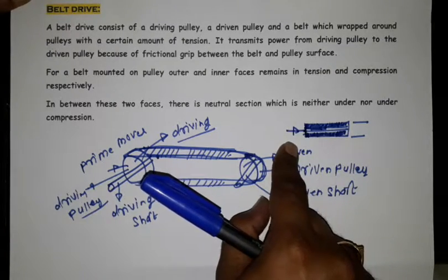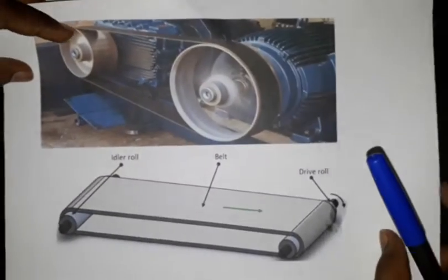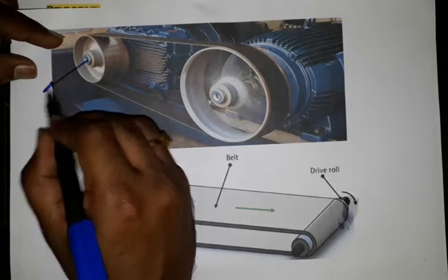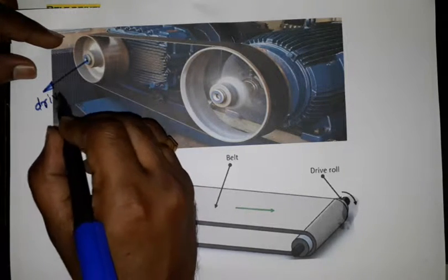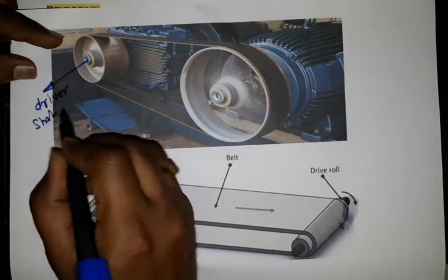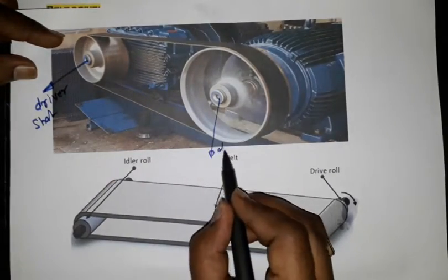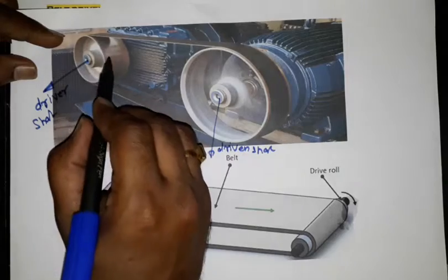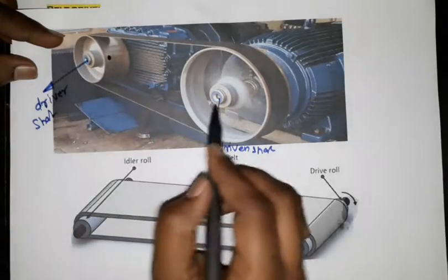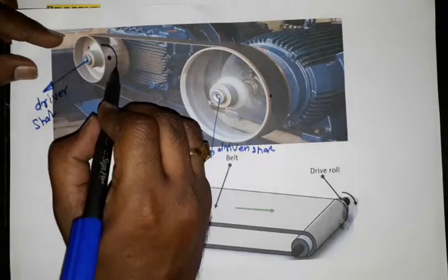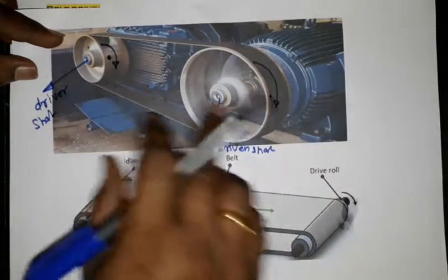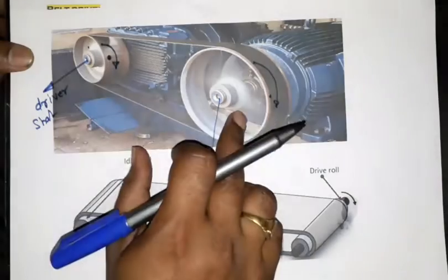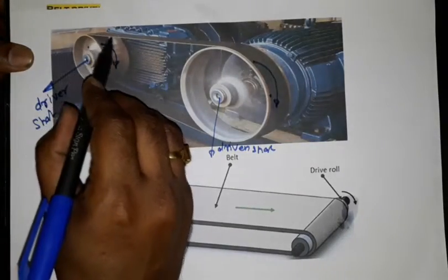Here there will be tension and here there will be compression. For example, you have your driver shaft and you have your driven shaft. You have your driver pulley. They move in the same sense. When this rotates clockwise, this will also rotate clockwise. The belt will face the tension.